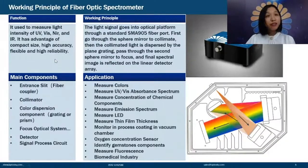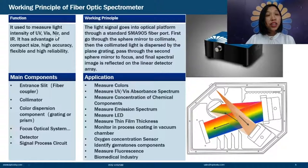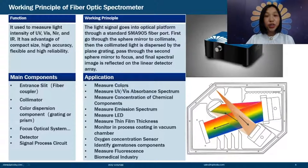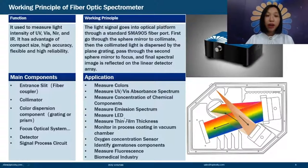Modular spectrometers are used to measure light intensity in the UV, visible, NIR, and IR ranges. They have advantages of compact size, high accuracy, flexibility, and good reliability. They are typically used to measure colors, absorbance, and concentrations — such as emission spectra, LED performance, thin film thickness — and also to monitor process coatings in vacuum chambers and oxygen concentration.